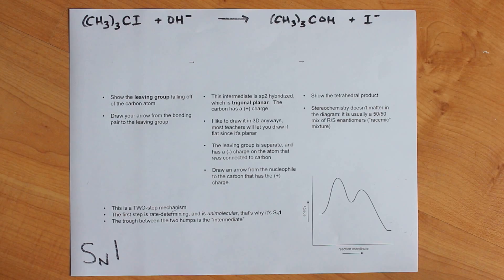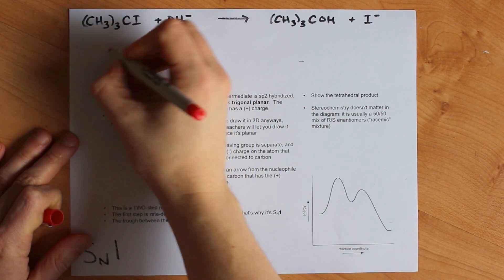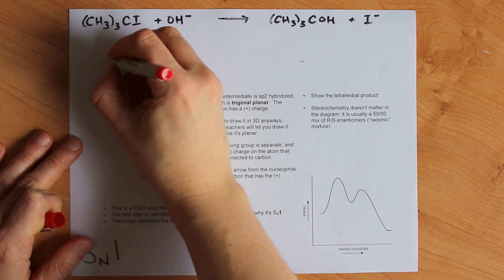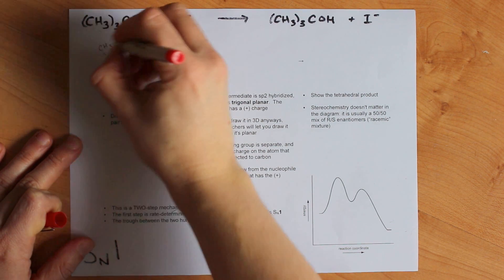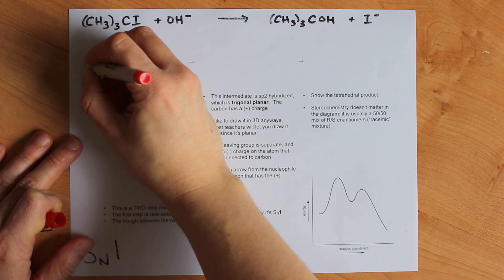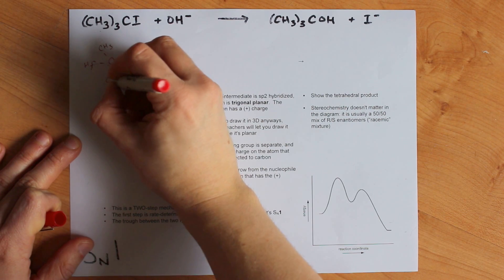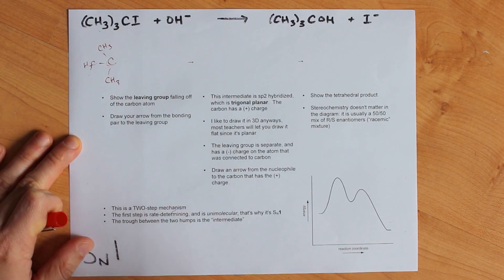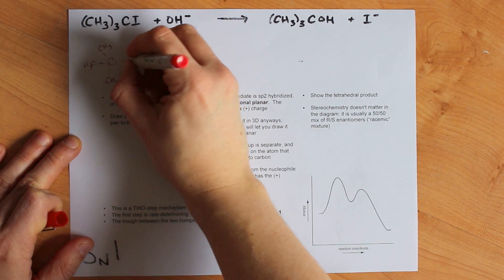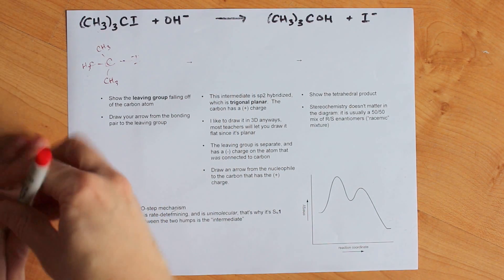This is where we start drawing it together. So I've got a carbon here, and I have three CH3 groups attached to it. That makes this a tertiary carbon atom, and I have an iodine attached to it.